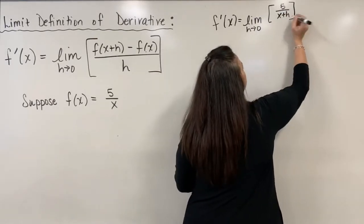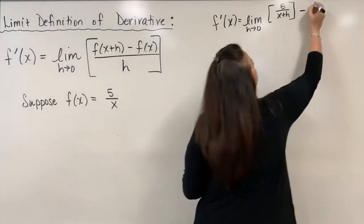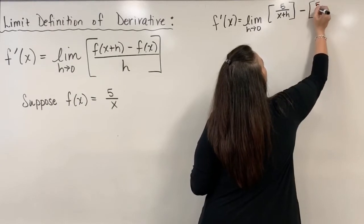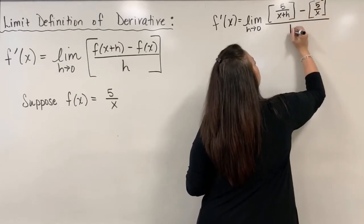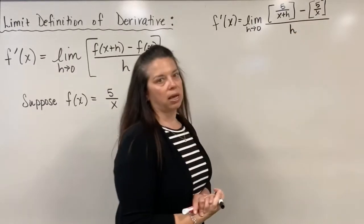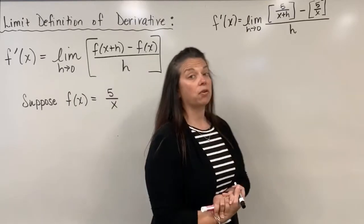Then I will subtract off the original function f of x, which was just 5 divided by x, and of course per the formula, all of that is divided by h. That is, in my entire numerator, 5 over x plus h minus 5 over x.